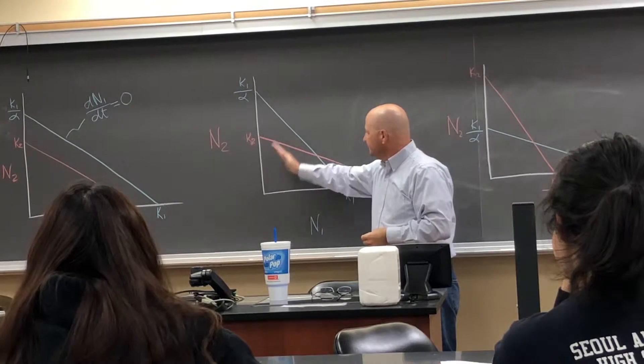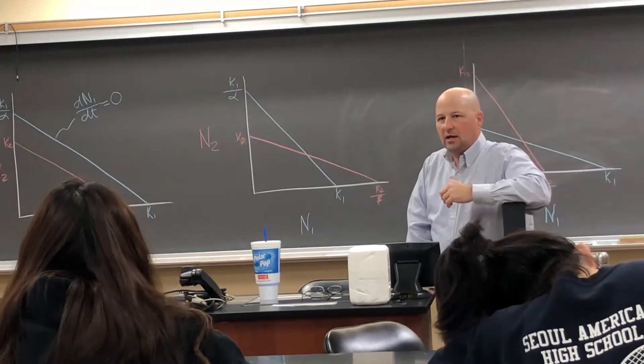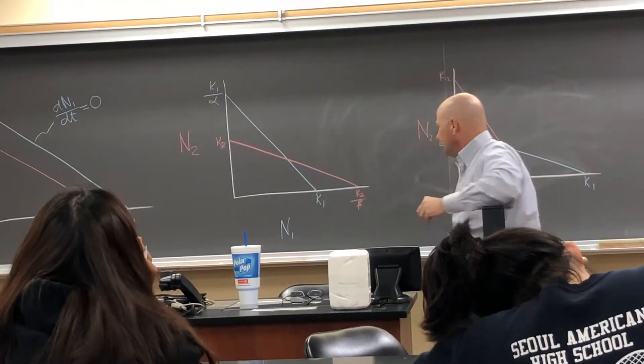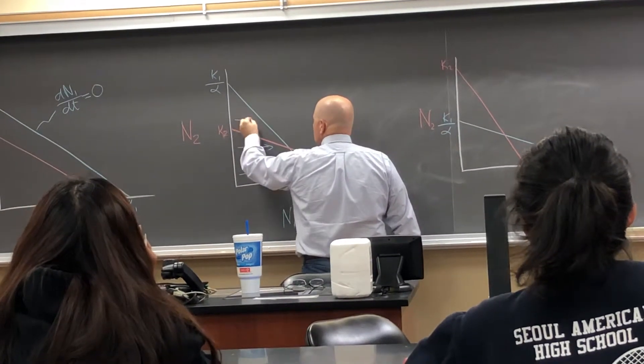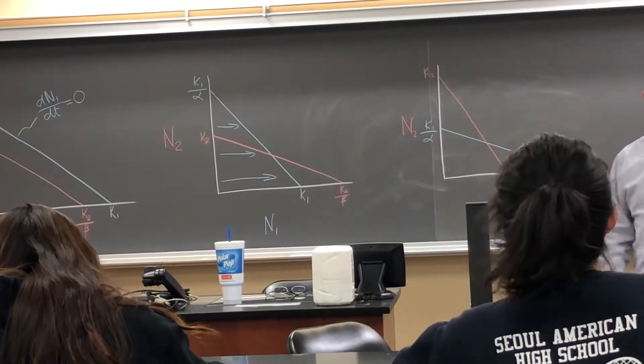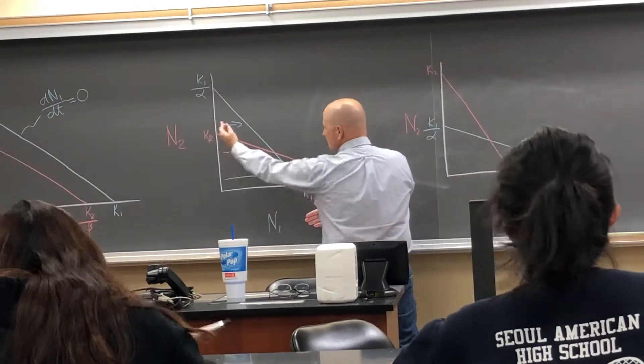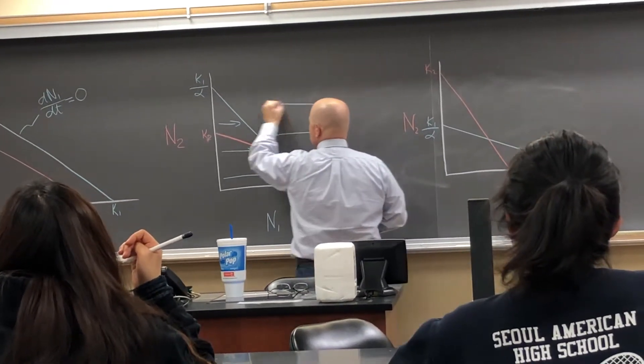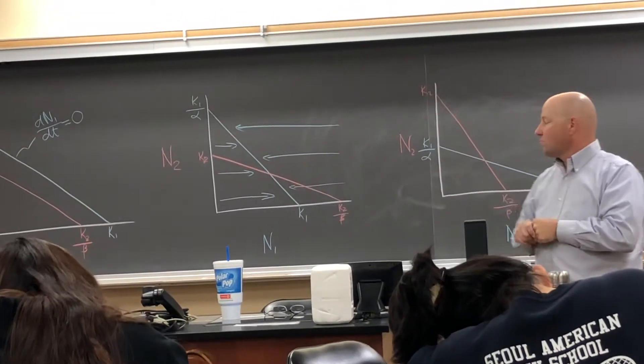So anywhere underneath this line, underneath the blue line, what direction is species 1 doing? Is it growing or declining? Under the blue line? Growing. Okay, so anywhere under the blue line, the species 1 still has some carrying capacity left. And so they would still grow. Makes sense. If the combinations of population sizes of 1 and 2 are above this blue line, then species 1 would be declining. They'd be over carrying capacity and would be declining.